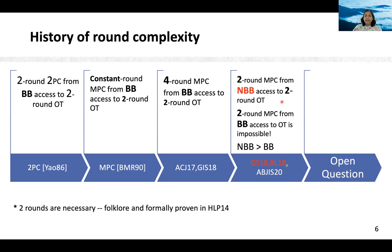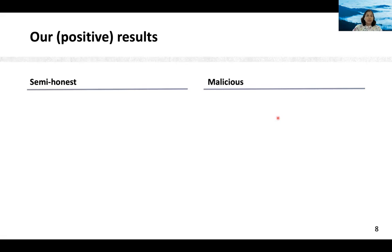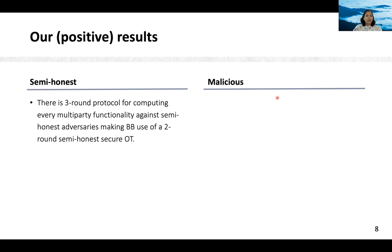These results leave the curious case of three-round MPC open. Whether one can design a three-round MPC protocol from black box access to oblivious transfer or not is still an open question, and this is the question that we settle in this paper. The spoiler is it's a positive result. We have two results, one in the semi-honest and the other in the malicious setting. In the semi-honest setting, we show that there is a three-round protocol for computing every multi-party functionality against semi-honest adversaries making black box use of a two-round semi-honest secure oblivious transfer.